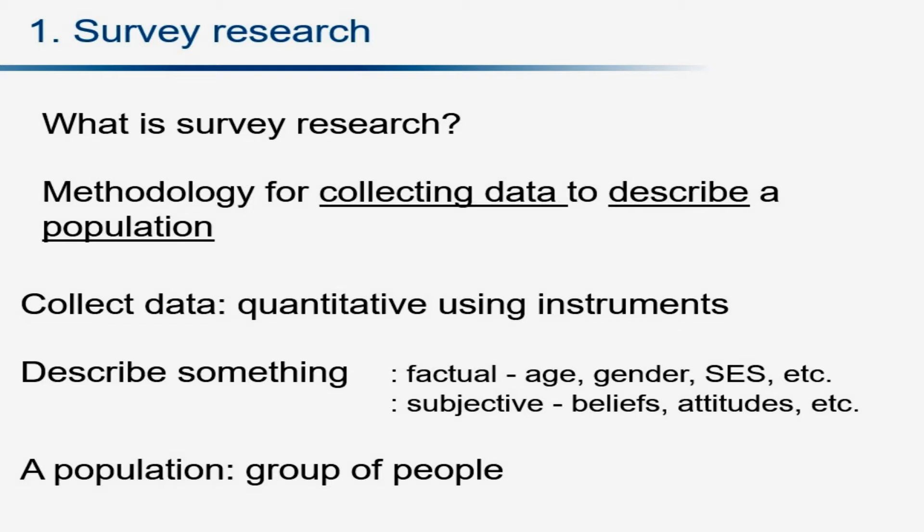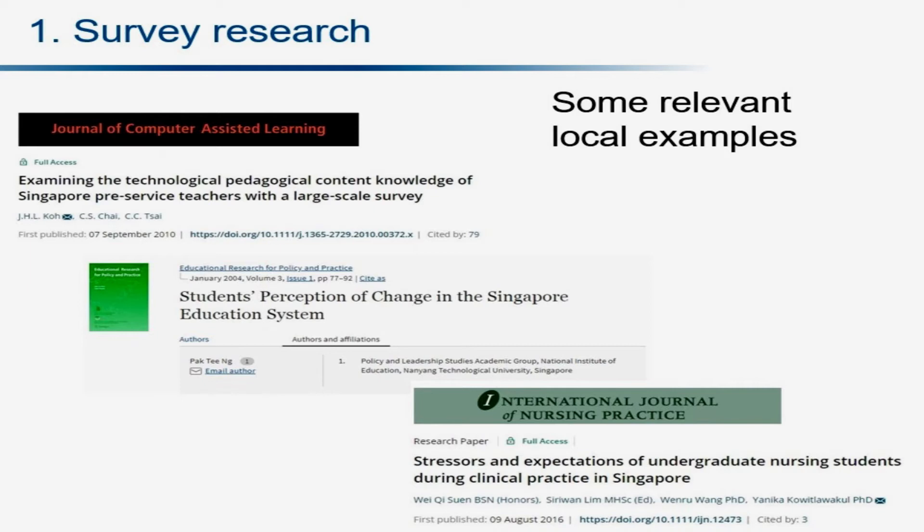The next important component is population. You're supposed to describe a group of people with certain characteristics. This sort of general definition gives you an idea of how broad survey research is. You yourself may have done survey research, either as a participant or as a researcher.